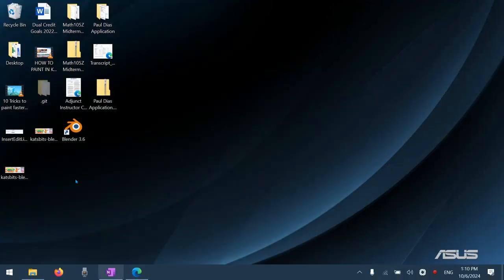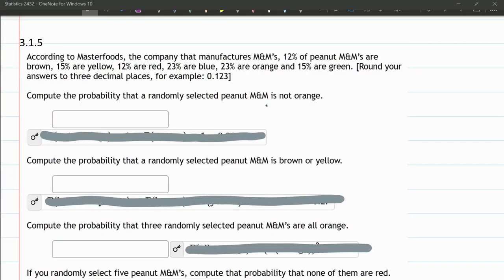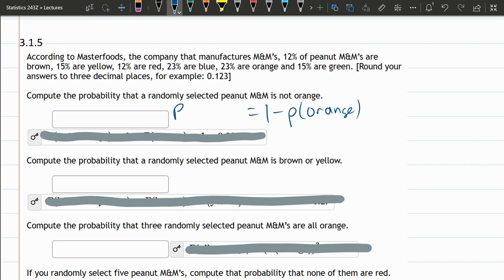So this is 1 minus probability orange. This is the probability of not orange. So that's 1 minus the probability of orange. What's the probability of orange? 23% are orange, so 0.23, turning the percent to a decimal. Subtract this, we have 77.